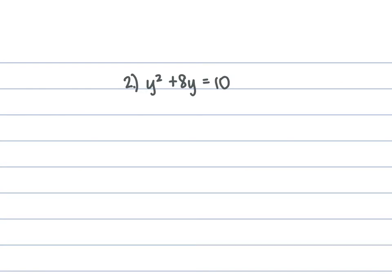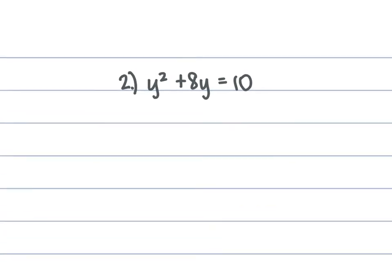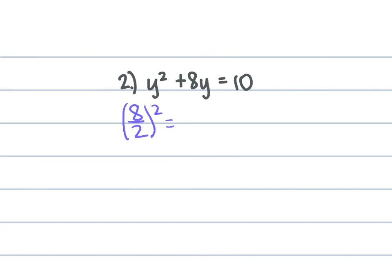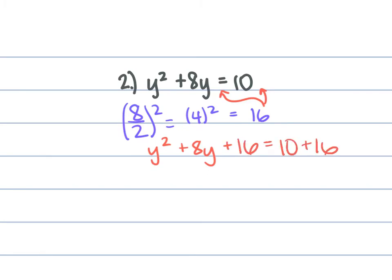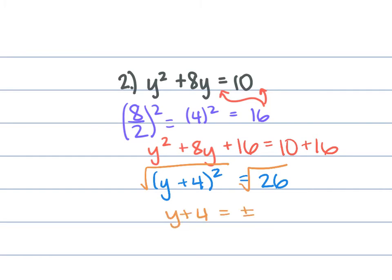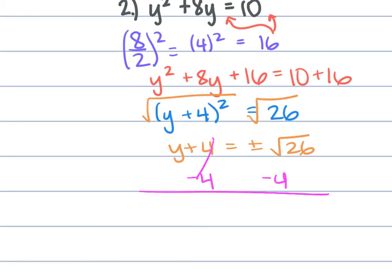For problem 2, we have y squared plus 8y equals 10. b is 8, so b over 2 squared: 8 over 2 squared is 4 squared, which is 16. Add 16 to both sides: y squared plus 8y plus 16 equals 10 plus 16. Factor to get y plus 4 squared equals 26. Take the square root: y plus 4 equals plus or minus the square root of 26. Subtract 4: y equals negative 4 plus or minus the square root of 26.